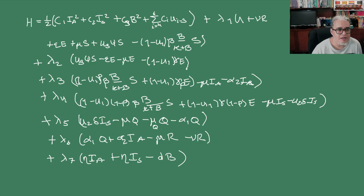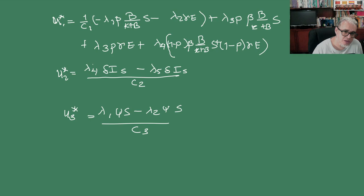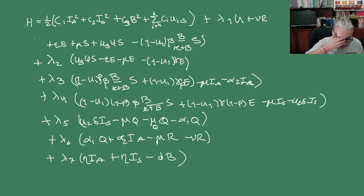Luego, escribimos el Hamiltoniano en términos de siete coeficientes de Lagrange, de multiplicadores de Lagrange. Y luego, escribimos estos óptimos en términos de los multiplicadores y de estas cantidades. Estas tres U's representan el control óptimo de sanitización, educación y cuarentena. Obtenido vía minimizar la derivada parcial de esta H respecto de la U, respecto de las tres U's.